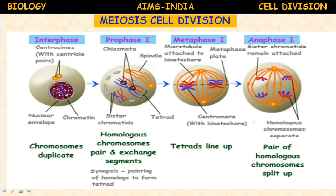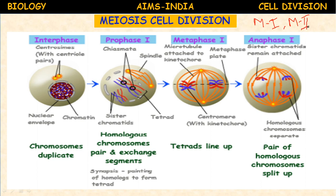Meiosis can be studied under two headings: Meiosis I and Meiosis II — karyokinesis occurs twice in meiosis. In mitosis only one nuclear division occurs, but in meiosis two nuclear divisions occur. Meiosis I is called the reductional division, and Meiosis II is called the equational division, which is similar to mitosis. Meiosis I is also called heterotypic division because it brings about change from the diploid to the haploid state.